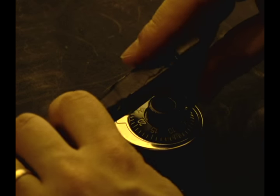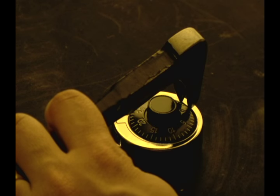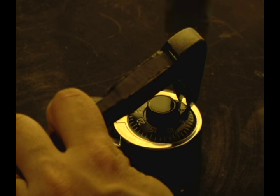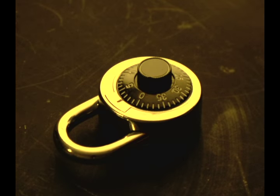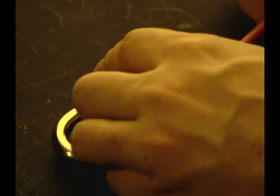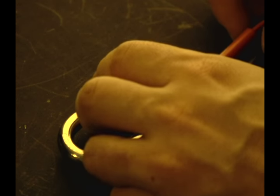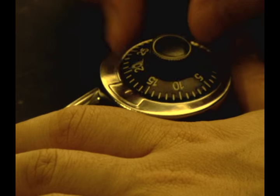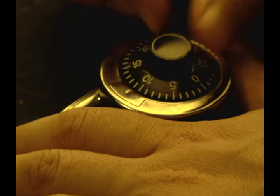However, a lock is only as strong as its weakest point. A lock breaker may look for mechanical flaws, or failing that, extract information in order to narrow down the correct combination. The process of lock breaking and code breaking are very similar.